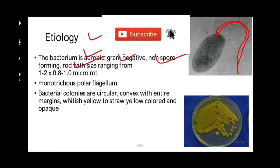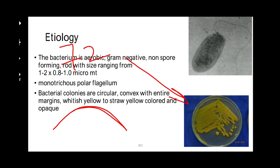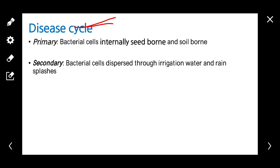Bacterial colonies are circular and convex; when viewed from the side they appear raised. The colony color is yellow due to the production of the pigment xanthomonadin. Coming to the disease cycle: the bacteria is seed-borne, and secondarily spreads through irrigation water and rain splashes.